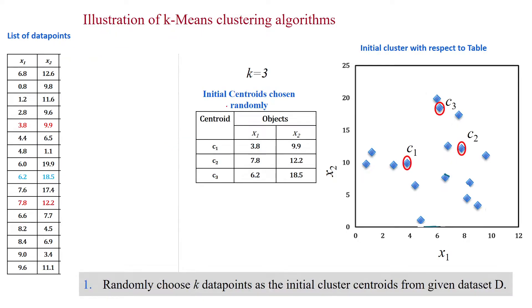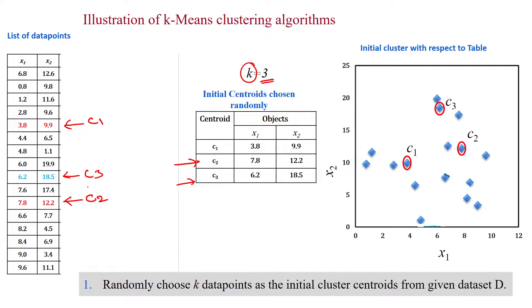Initially I am giving 3 as the input for k. I am randomly taking three data samples as cluster centroids. This one is acting as cluster centroid 2, and 3.8, 9.9 is assigned as cluster centroid 1, and cluster centroid 3 is 6.2 and 18.5.